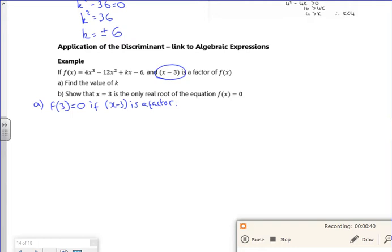Right, so my 4 lots of 3 cubed minus 12 lots of 3 squared plus k lots of 3 minus 6 must equal 0. If I cheat and use the calculator a little bit, I've got 108 minus 108, so there you go, I've got 3k minus 6 is 0.